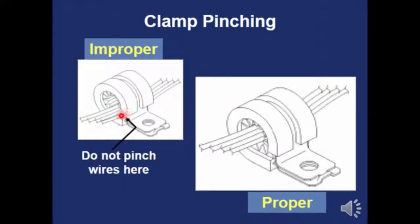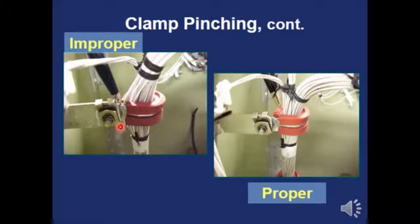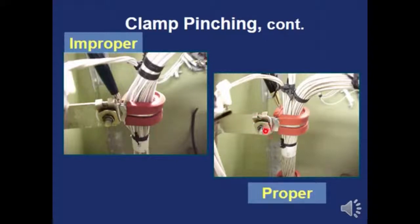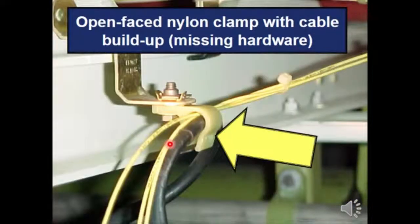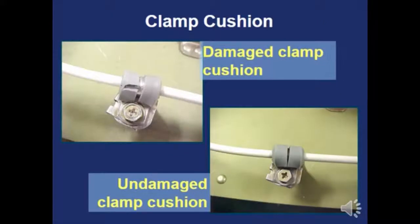We don't want wires pinched underneath the clamp. Here's a careless installation — somebody pinched the wires as they installed the clamp. It would be great to have extra sets of hands: one to hold the wires together, one to close the clamp, and one to tighten the screws. In one case, the clamp was missing hardware and wasn't fully secured. If a clamp has broken rubber, discard it and get a new one.